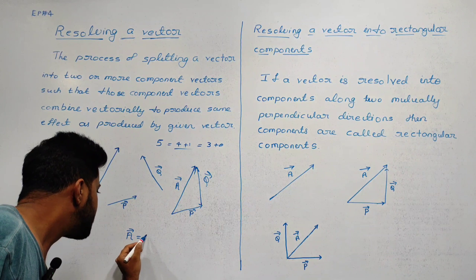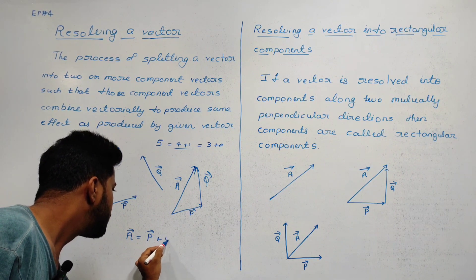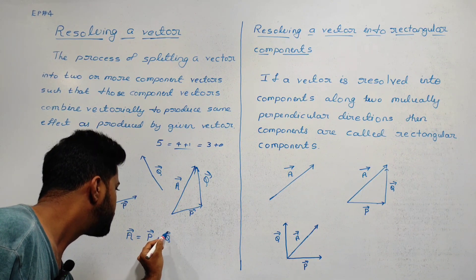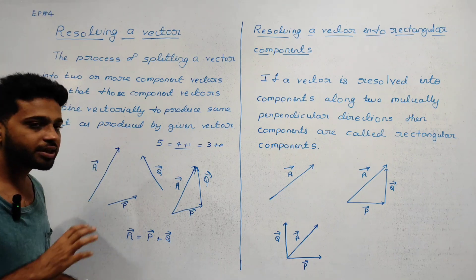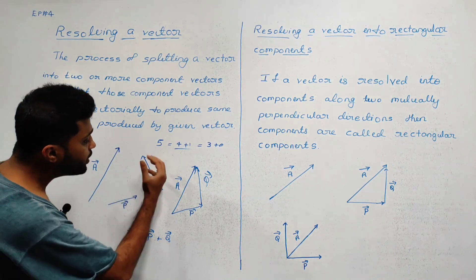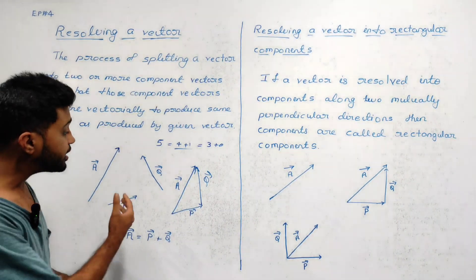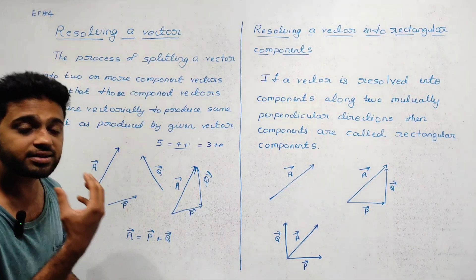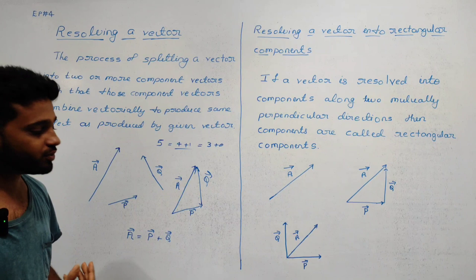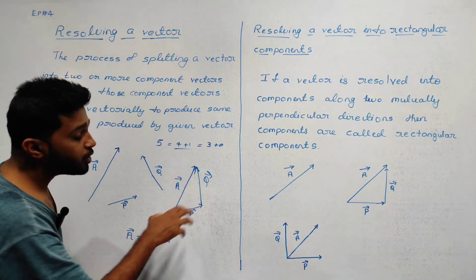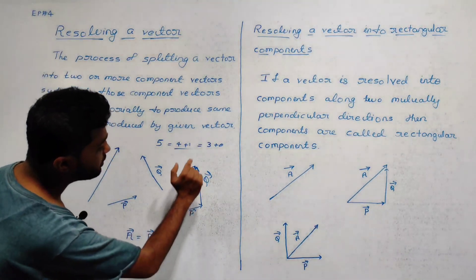We are doing this as resolving vector. Vector A equals Vector P plus Vector Q. Given vector A, two different vectors are resolved — Vector P plus Vector Q are components of vector A.